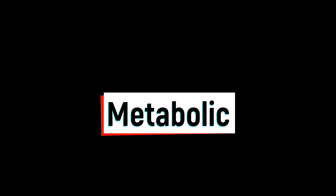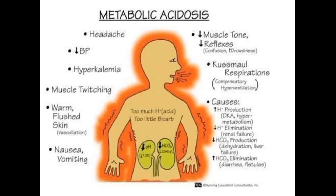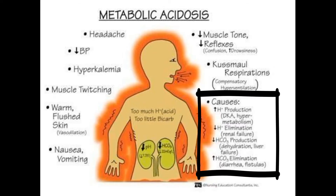Starting with metabolic acidosis — the causes are too much acid and too little bicarbonate. These include increased acidic production such as in diabetic ketoacidosis, hypermetabolism causing lactic acidosis, reduced acid elimination such as in renal failure, reduced hydrogen carbonate production in dehydration or liver failure, and increased hydrogen carbonate elimination in diarrhea or fistulas.